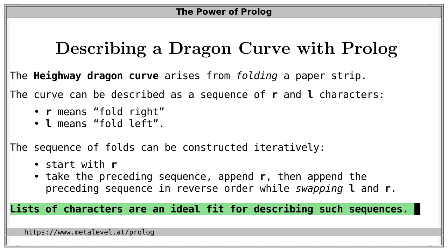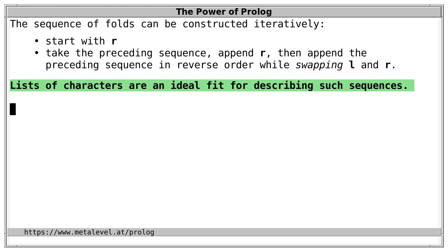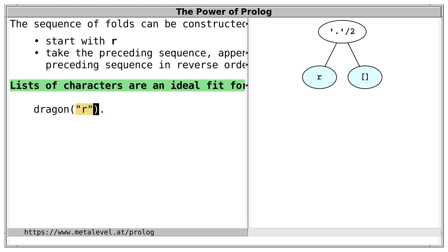Now to describe the sequence in Prolog, lists of characters are of course an ideal fit. Because R and L are already characters, that is atoms of length 1. So let's describe this in Prolog. What is a dragon curve sequence? Well, first of all, the list consisting only of the character R is such a sequence, right? That's the simplest case.